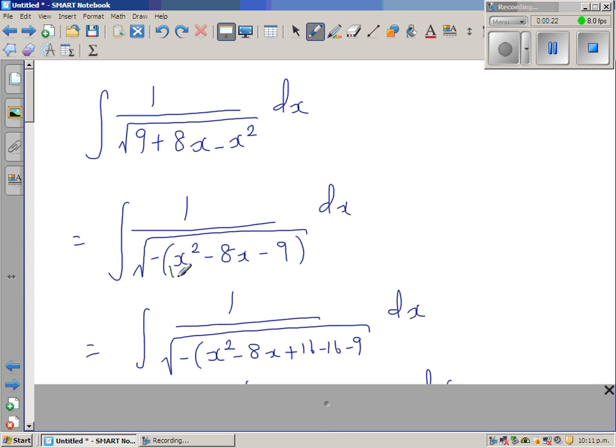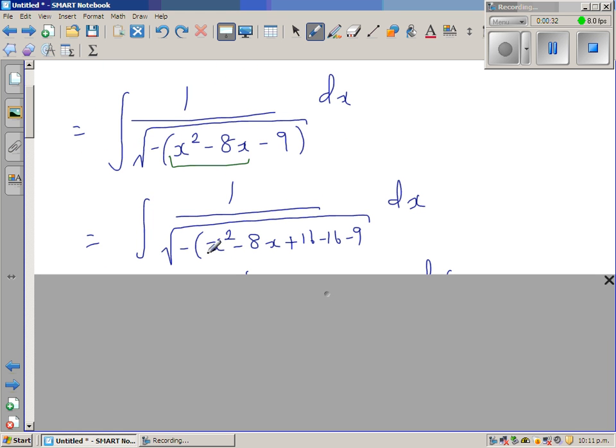Now to make a perfect square, do the half of 8 which is 4, negative 4 and square is 16. So adding 16 and taking 16, this becomes a perfect square and this is also a perfect square.